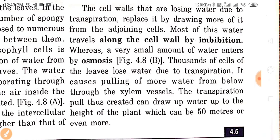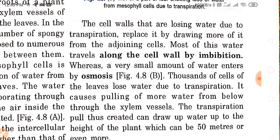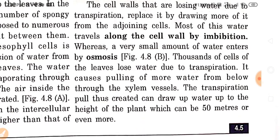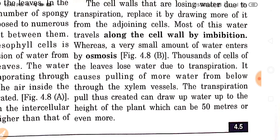The cell walls losing water due to transpiration replace it by drawing more from the adjoining cells. Most of this water travels along the cell wall by imbibition, whereas a very small amount enters by osmosis. Thousands of cells of the leaves lose water due to transpiration, causing pulling of more water from below through the xylem vessels. The transpiration pull thus created can draw water up to the height of the plant, which can reach 50 meters or even more.